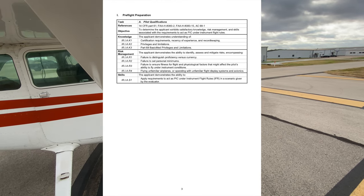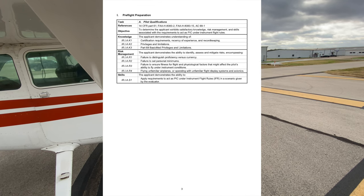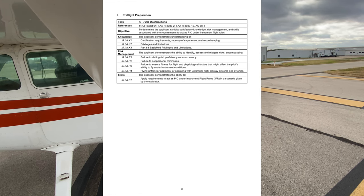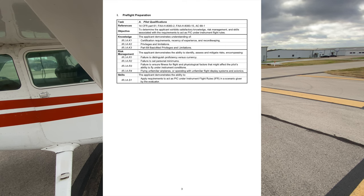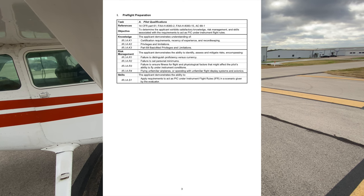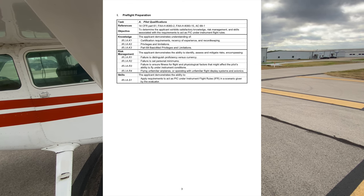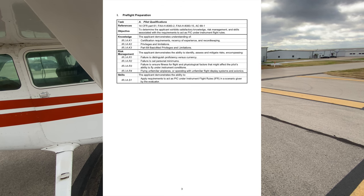Your DPE might ask when an instrument rating is required. This is part of S1 — in IFR flight conditions, conditions less than VFR, Class Alpha airspace, special VFR at night, and carrying passengers greater than 50 nautical miles or at night for hire. For pre-flight information, 91.103 gives us the acronym NWCRAFT: NOTAMs, weather, known ATC delays, runway lengths, alternates, fuel, and takeoff and landing distances at airports of intended use.